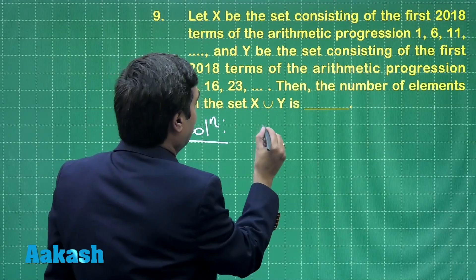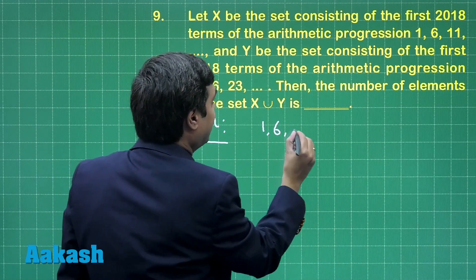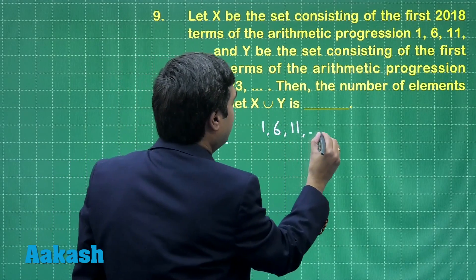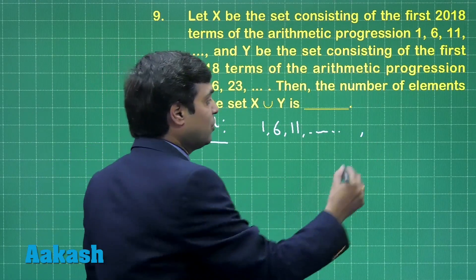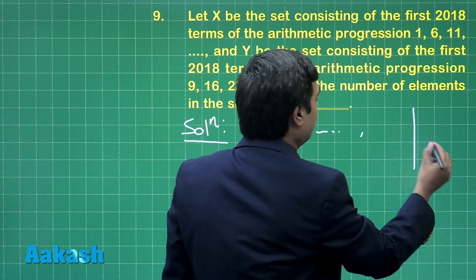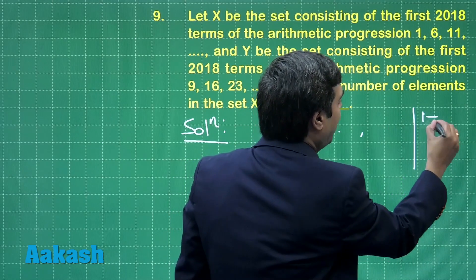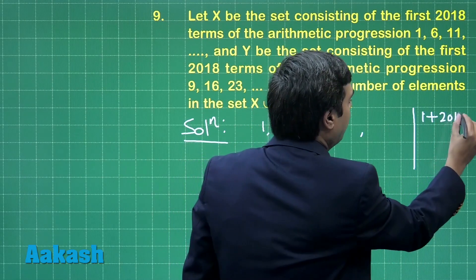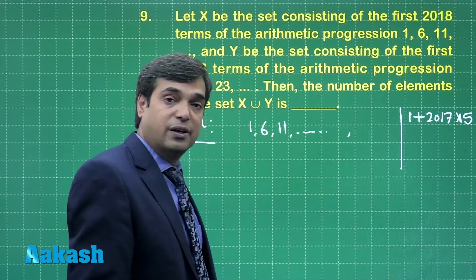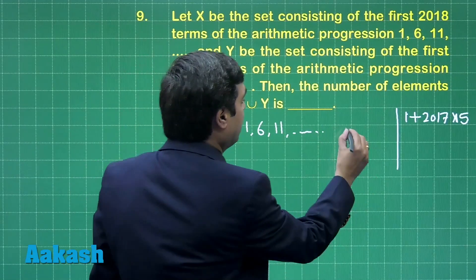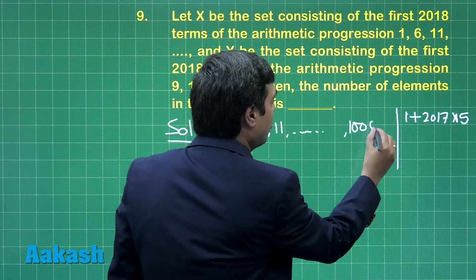First AP is 1, 6, 11 and so on. We have to go till 2018 term. So, let us take it on rough that what is the 2018 term - this would be 1 plus 2017 into 5 as the common difference. So, this gives us 10086.